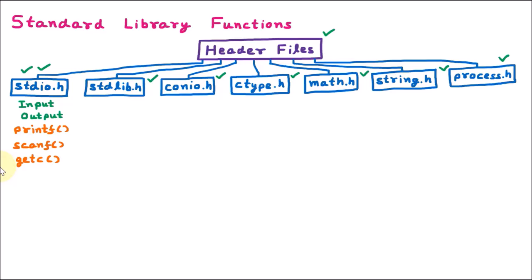The next function is putc — put character — for putting a character onto the user screen. The next function is gets, where 's' stands for string, meaning we are taking string input from the user. The next function is puts, which puts the string onto the user screen.